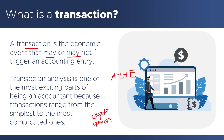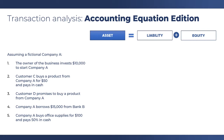In this slide, you will see five transactions of fictional company A. These are transactions because these are economic events that may or may not trigger an accounting entry. The first one: the owner of the business invests $10,000 to start company A. The second: customer C buys a product from company A for $50 and pays in cash. The third: customer D promises to buy a product from company A. Four: company A borrows $15,000 from bank B. And five: company A buys office supplies for $100 and pays 50% in cash.